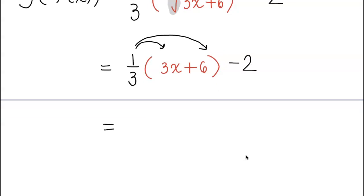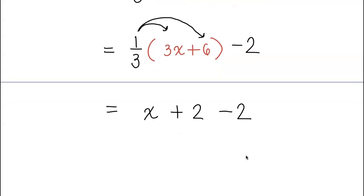One third times 3x is 1x, and one third times 6 is going to give you plus 2. Oh, but when I bring down that minus 2 that was outside the whole time, we notice that positive 2 and negative 2 cancels out.